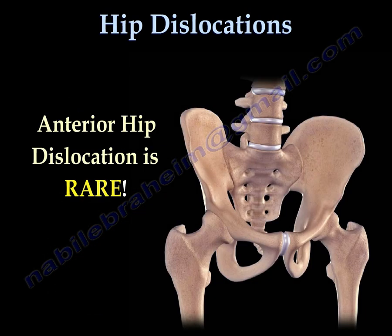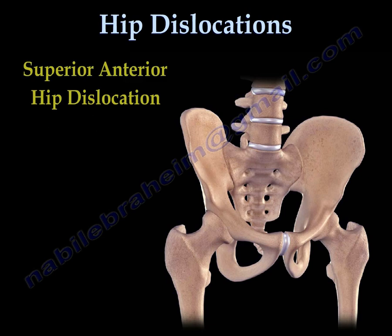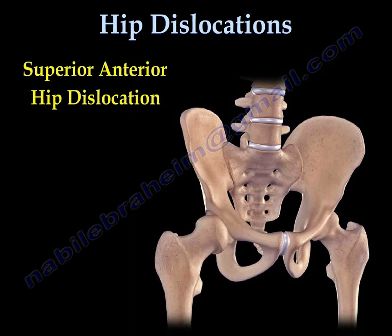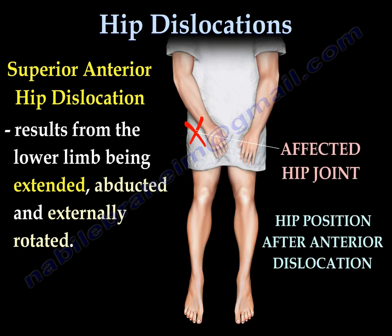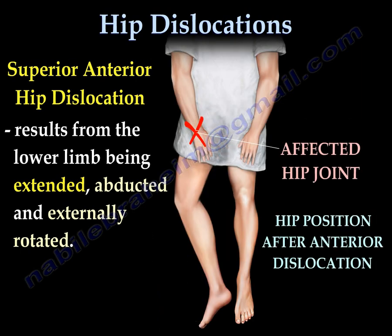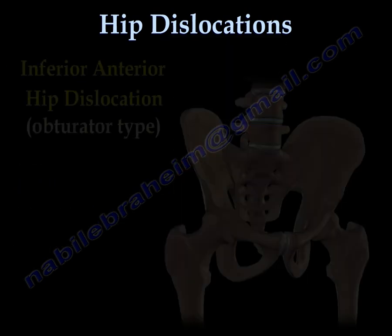Anterior hip dislocation is rare. It could be a superior anterior hip dislocation, in which the lower extremity will be extended, abducted, and externally rotated. You can see the position of the lower extremity after anterior dislocation of the hip.